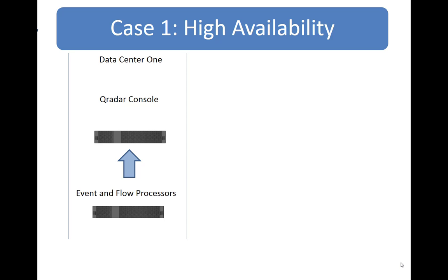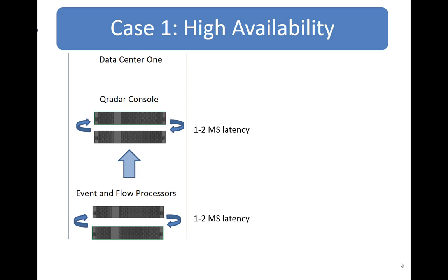When we look at the high availability case, going back to our earlier example of one event and flow processor and one console, we can set an identical piece of hardware right next to it on the shelf — probably on the next rack over — attached to a different circuit and perhaps a different switch. They are functionally identical and one to two milliseconds apart; very tight latency. If I lose that console, it is going to immediately pick up from the other side with no loss of fidelity. There might be one or two log events dropped, but you are not going to see a lot — it will be a very tight, nearly identical circumstance.